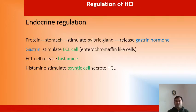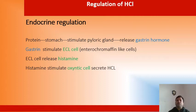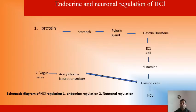So, the regulation of hydrochloric acid — endocrinal regulation means the hormone responsible for the regulation of hydrochloric acid. When we take food, the protein coming to the stomach stimulates the pyloric gland, which releases a gastrointestinal hormone. This hormone stimulates ECL cells — enterochromaffin-like cells — and these cells release histamine, which finally stimulates the oxyntic cell to secrete hydrochloric acid. I can also show the diagram of this mechanism.